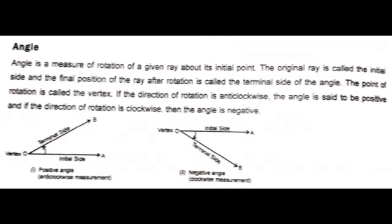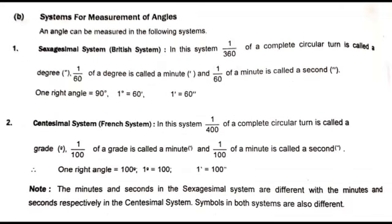An angle is a measure of rotation of a given ray about its initial point. The original ray is called the initial side and the final position of the ray after rotation is called the terminal side of the angle. The point of rotation is called the vertex. If the direction of rotation is anti-clockwise, the angle is positive; if clockwise, the angle is negative, as shown in the figure.